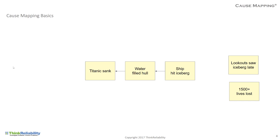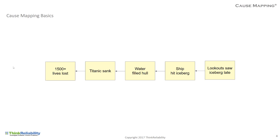When you ask why did the ship hit an iceberg, the answer is the ship hit an iceberg because the lookout saw the iceberg late. And then you have 1,500 fatalities as the last box shown here — that's really an effect of the Titanic sinking. So while we started and said the Titanic sinking was an effect, it's really a cause of 1,500 people dying. So we have a simple set of four why questions that lay out a very basic cause and effect analysis.